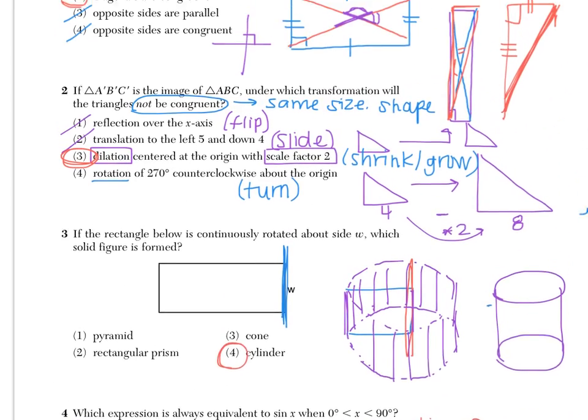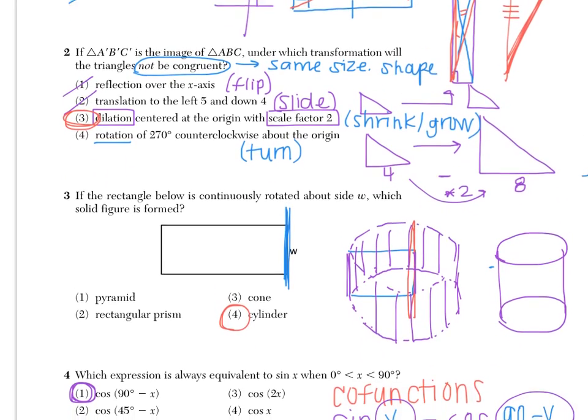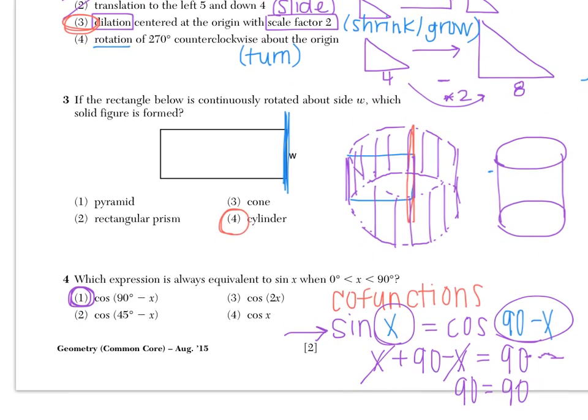So answers for one through four, we've got number one is choice two. Number two is choice three. Number three is choice four. And number four is choice one.